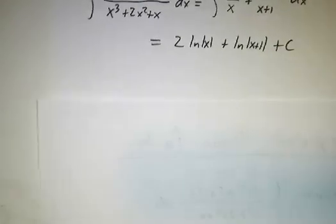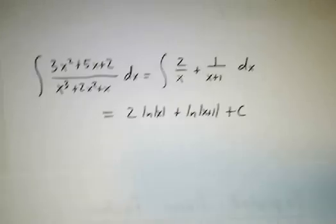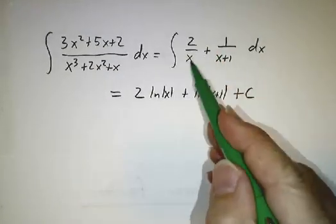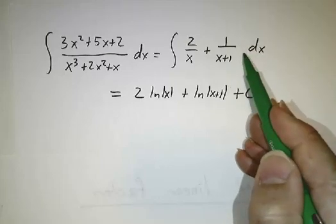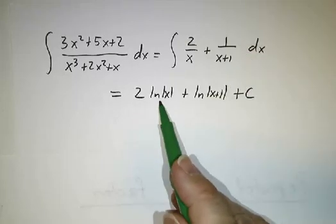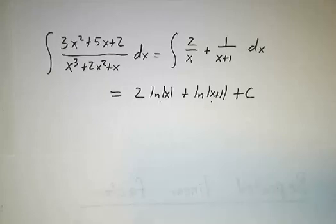And once we've done with that, we rewrite our ratio as 2 over x plus 1 over x plus 1, plus 0 over x plus 1 squared, and we integrate that, we get 2 log x plus log x plus 1, and we're done.